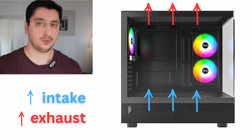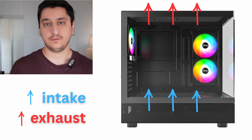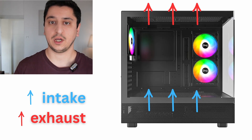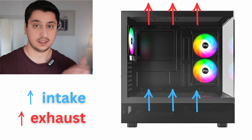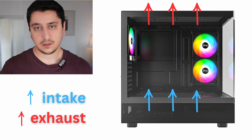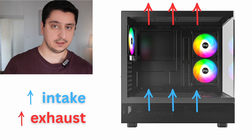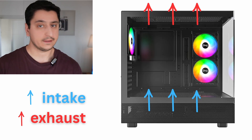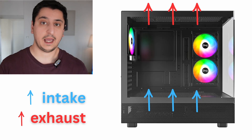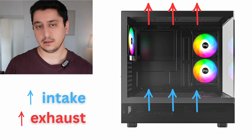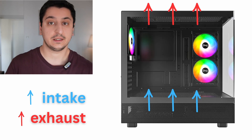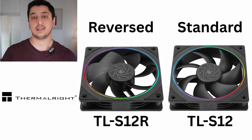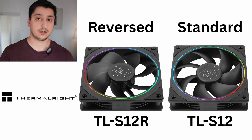So what happens if we want to add more fans? As a general rule, you should know that hot air travels upwards and not downwards. Meaning if we want to add more fans in this case, we can add more fans at the bottom and at the top. The bottom fans will act as intake and the top fans will act as exhaust. And this is where reversed and standard RGB fans come into play.